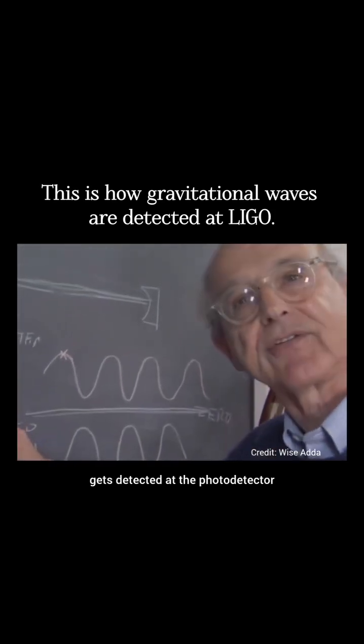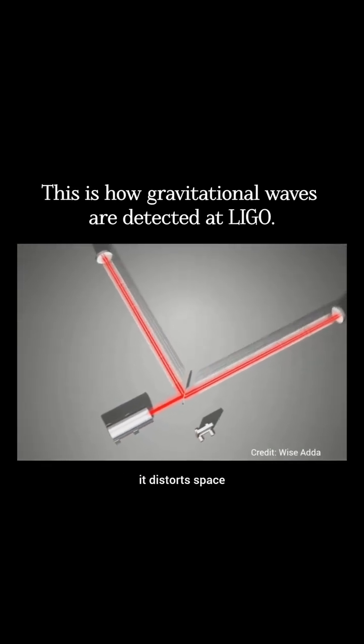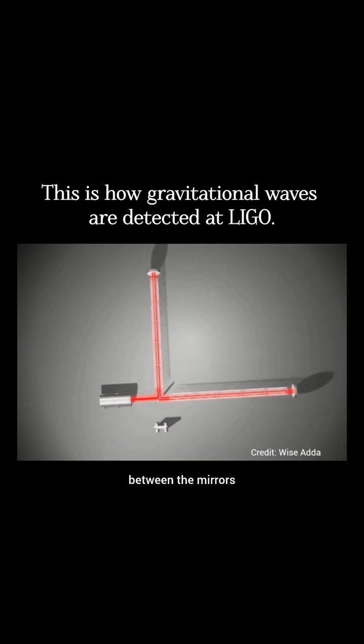No light gets detected at the photodetector. But when a gravity wave comes along, it distorts space and changes the distance between the mirrors.